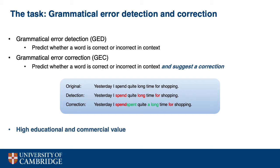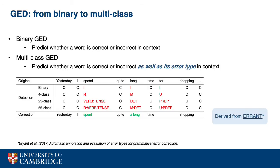Both GED and GEC are very important practical applications with high educational and commercial value. Until now, error detection has mainly been treated as a binary task, which is limited in terms of the specific error type information it can provide to downstream tasks like GEC. Therefore, we propose multi-class GED. We extend binary detection to 4-class, 25-class, and 55-class error detection using different error type tagsets derived from the ERRANT framework.